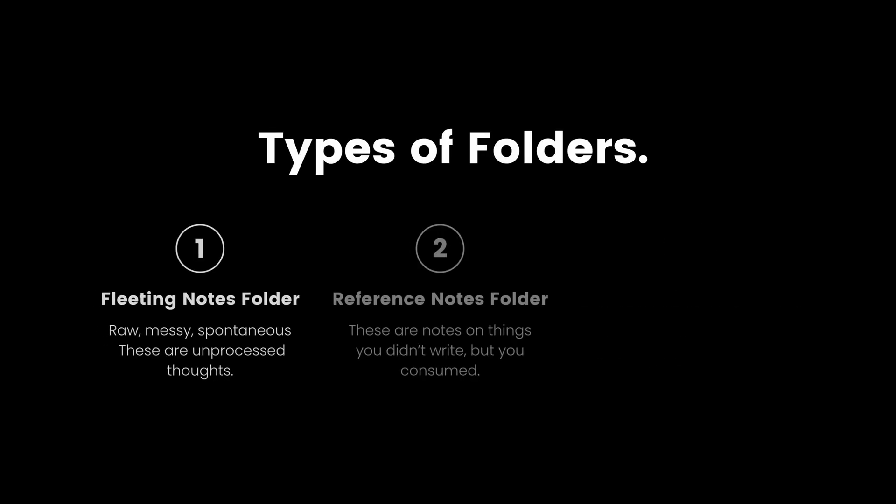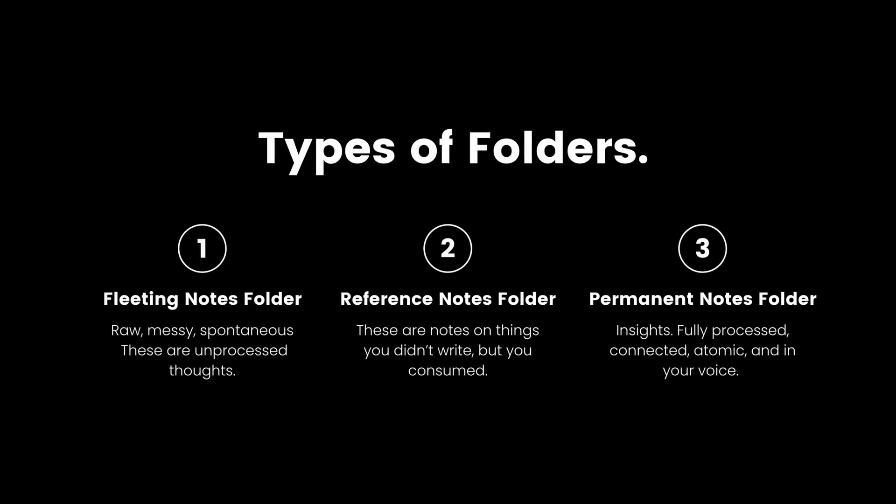But what about the setup? Do you need to create hundreds of folders and organize your notes for hours? Actually, you don't. You only need three types of folders. To have a Zettelkasten in Obsidian, you will need to create three folders, each representing a different type of note.